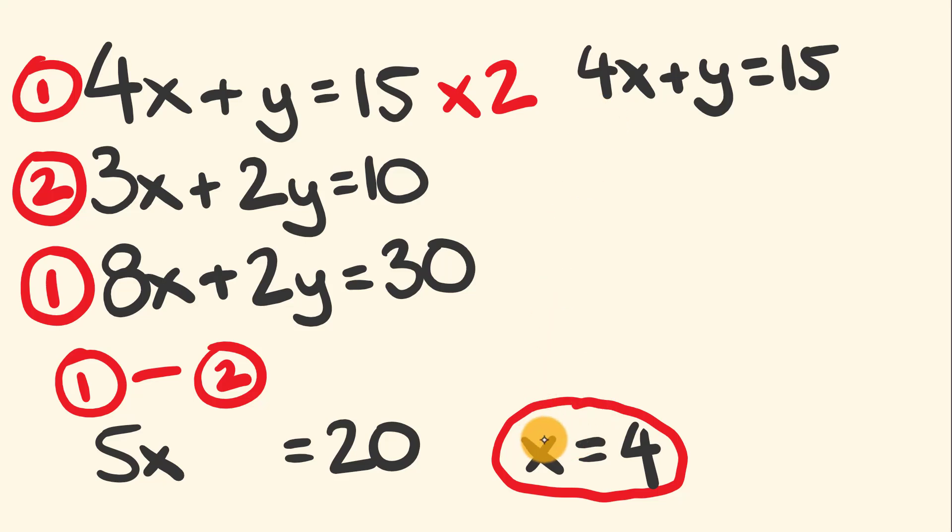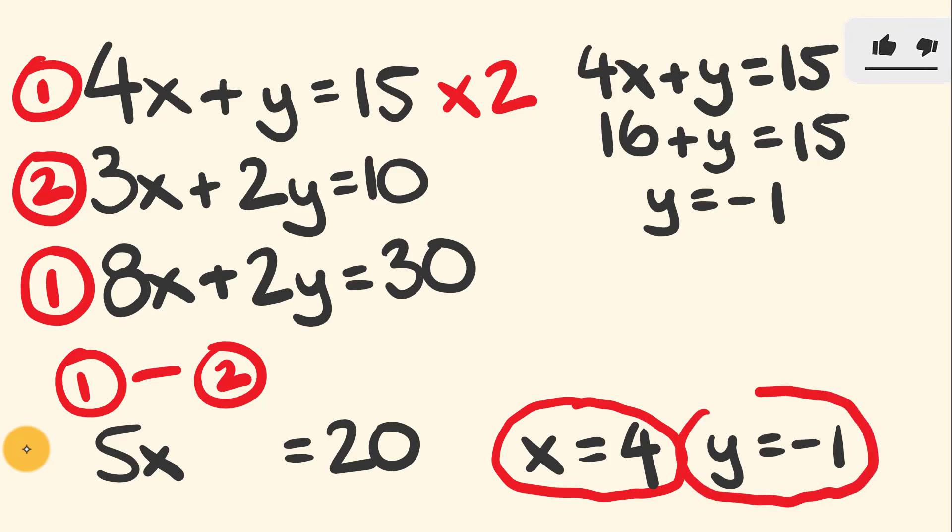If x equals 4, then 4x equals 16, so 16 plus y equals 15. What number do you add to 16 to get 15? You don't add—you take away. So y equals negative 1. That is to say, 16 minus 1 equals 15. We have y equals negative 1. I'll put a circle around that so we don't lose it.